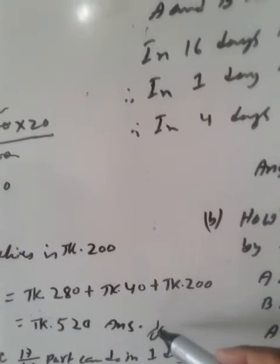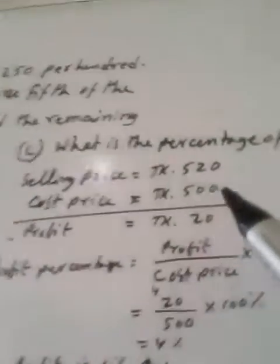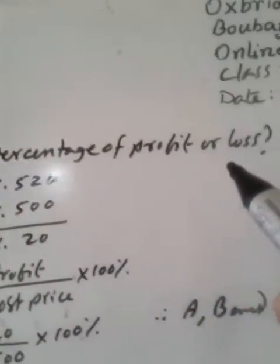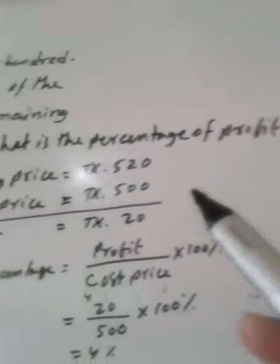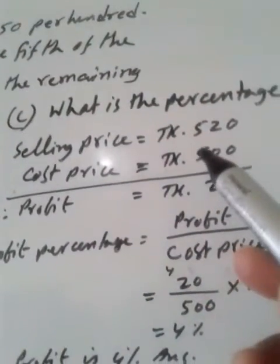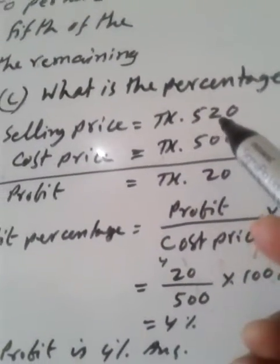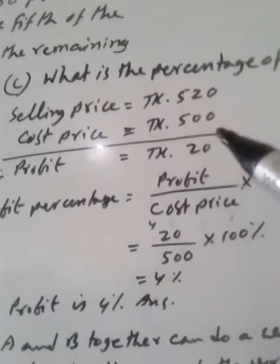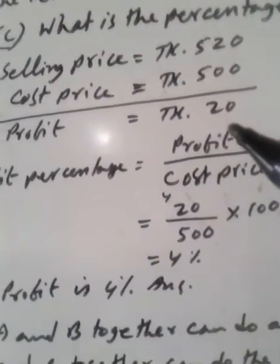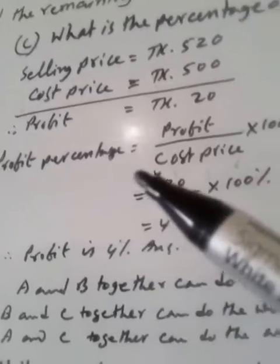This is the answer. And see, what is the percentage of profit or loss. Here, total selling price is 520 Taka and cost price is 500 Taka. Profit is 20 Taka.